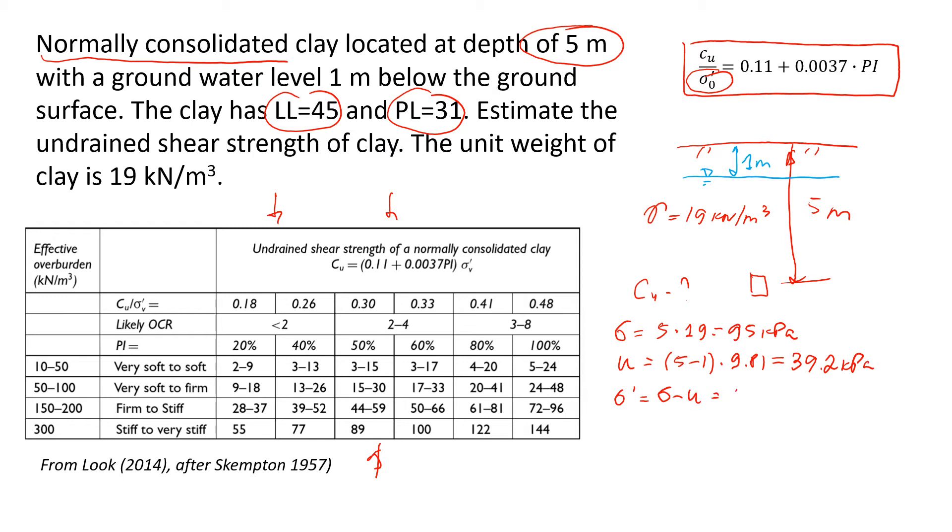It's 95 minus 39.2 will give us 55.8 kilopascals. Okay, so another value that we need to find is plasticity index.